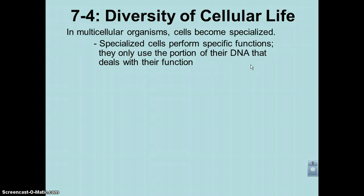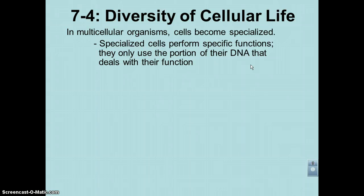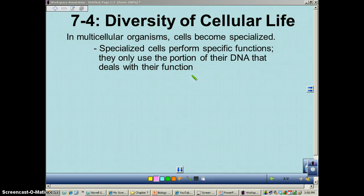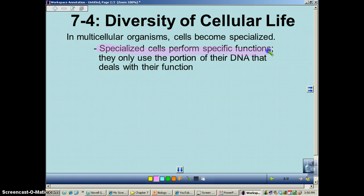Think of the human body — is it possible for a single cell to do every function going on inside a human body? Can a single cell become a heart cell, a nerve cell, a skin cell, and a stomach cell all at once? No, that is not possible. Therefore, we have cells that become specialized. Specialized cells perform specific functions.